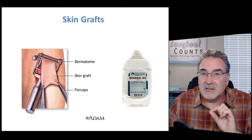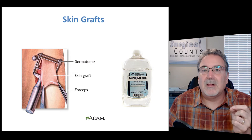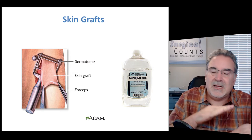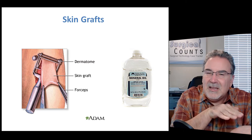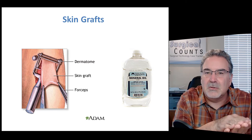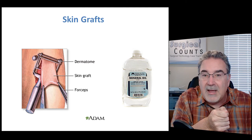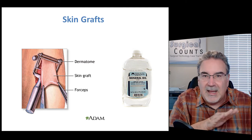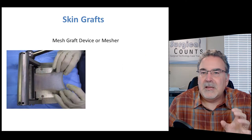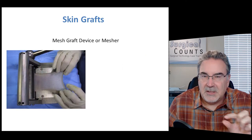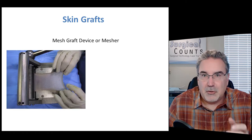Because this is a very fine layer of tissue, we usually apply mineral oil to the skin to make the blade slide nice and easy. Forceps are used to pull the skin away and hold it tight as the dermatome goes through. Then we place the skin graft into something called a mesher or mesh graft device.